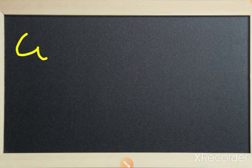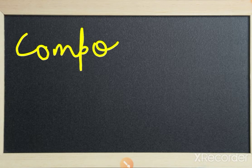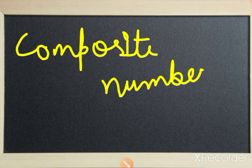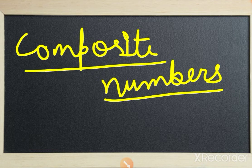What are composite numbers? A composite number is a positive integer which has factors other than 1 and itself.